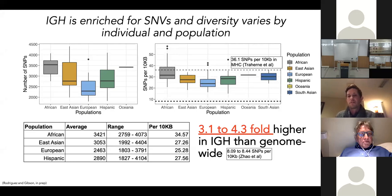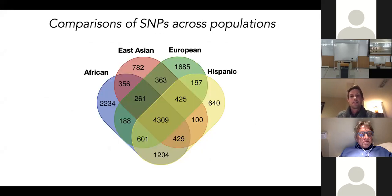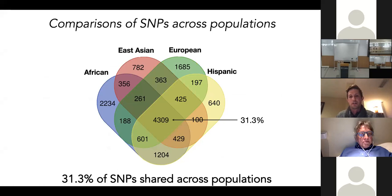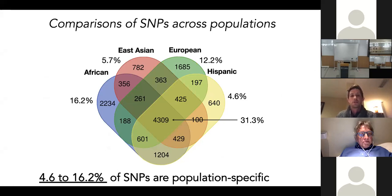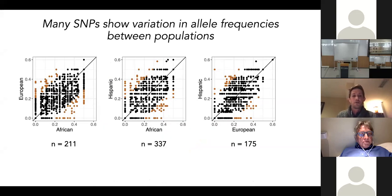IGH does seem to be a standout locus in the genome in terms of diversity, and this is a feature we've already published that seems to hold as we sequence more samples. We can also compare across populations and see that while a great number of SNPs are shared across all populations, a reasonable fraction are private or unique to different ethnic backgrounds. Even among overlapping variants, there are significant allele frequency differences — shown here in pairwise comparisons between ethnic groups, with red dots indicating SNPs with greater than 20% allele frequency differences between populations.